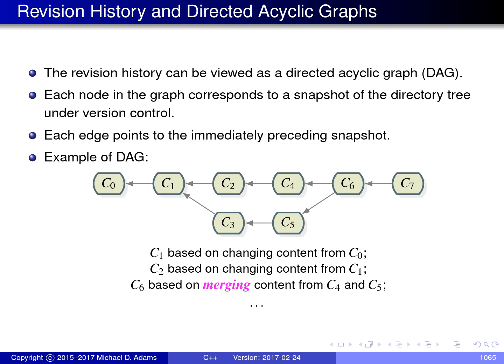On this slide, I have a simple example of a repository represented as a directed acyclic graph. The repository contains eight commits labeled C0 to C7. Commit C0 is the first commit ever put in the repository — there is no edge coming out of C0, meaning it has no predecessor. Commit C1 was produced by modifying C0, C2 was derived from C1, and C4 was derived from C2.